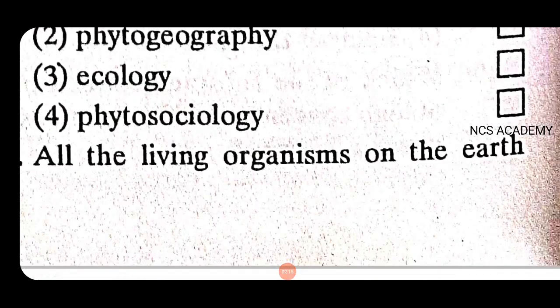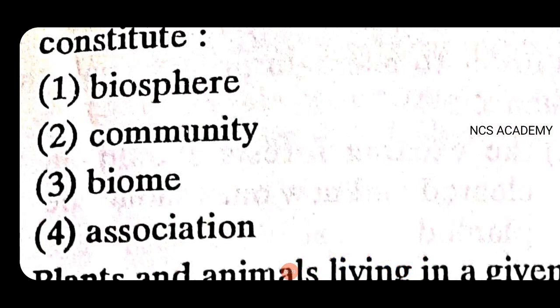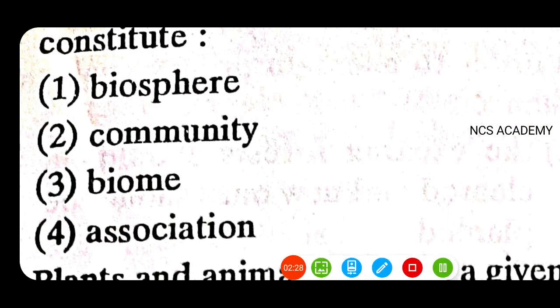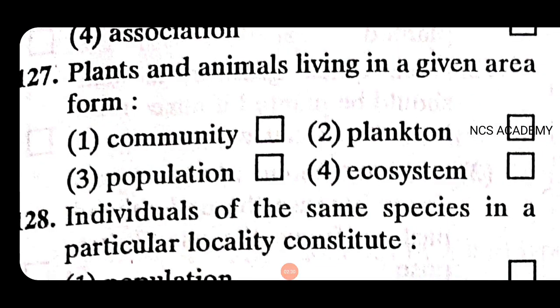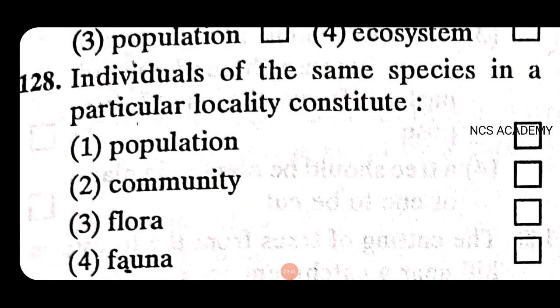All the living organisms on the earth constitute the biosphere — bio is the right answer. Plants and animals living in a given area form a community — the right answer is community. Individuals of the same species in a particular locality constitute a population.